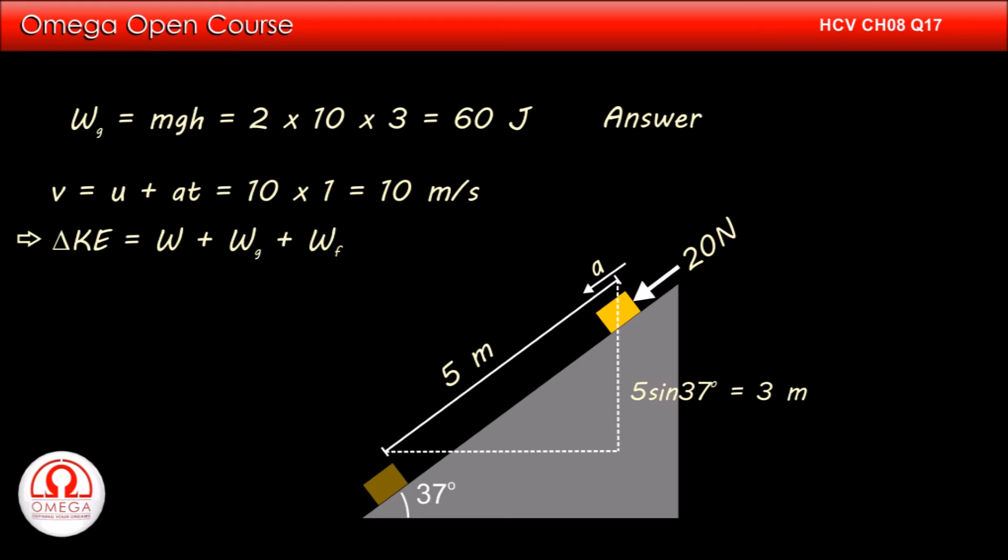Therefore, change in kinetic energy must be equal to work done by applied force plus work done by gravity plus work done by friction. This implies ½ × 2 × 100 must be equal to 100 plus 60 plus work done by friction. Solving, we get work done by friction is equal to -60 joules. This is the answer to part C of the question.